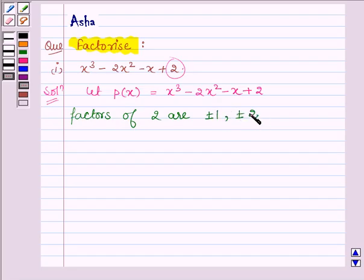By trial method we will find the value of x by replacing plus minus 1 or plus minus 2 such that the value of the polynomial p(x) comes out to be 0. Replacing x by this value one by one, we will find that on replacing x by 2 we get the value of the polynomial as 0.